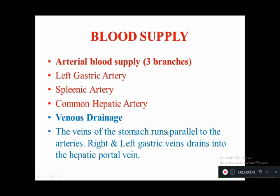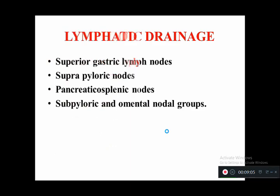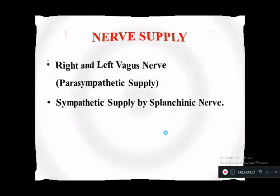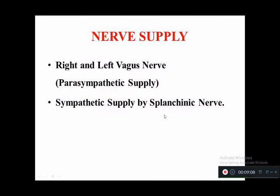The nerve supply to the stomach: the right and left vagus nerves provide the parasympathetic supply, and the sympathetic supply is provided by the splanchnic nerves.